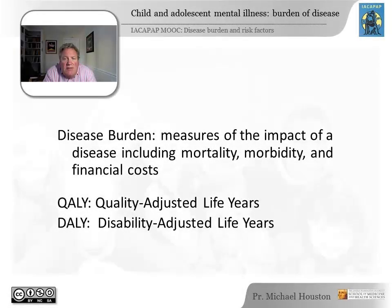Moving on to the measures of disease burden — when we try to measure the effect of a disease across the lifespan in terms of lost productivity, lost happiness, and loss of life itself, we're talking about disease burden. Two frequently used measures of disease burden are QALYs and DALYs. I'm not going to go into how these measures are calculated, because I think it is more important to just have a notion of what they are about.